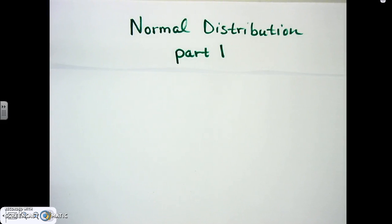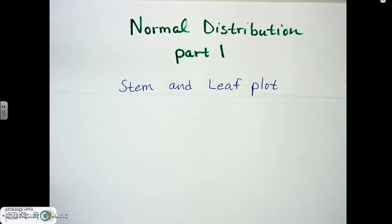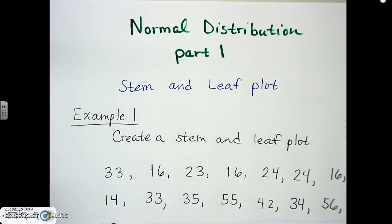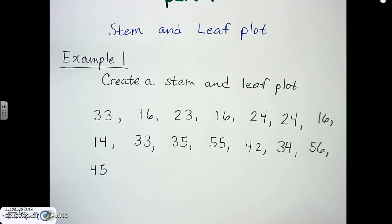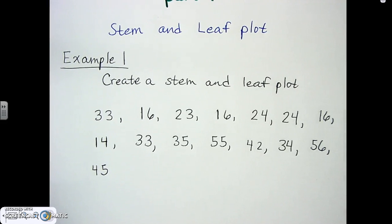The first thing goes back to something you learned in middle school, and I don't think you've done it in high school for a while. It's going to be stem and leaf plot. Here's an example and we're going to go through how to do a stem and leaf plot. Here's example one, and we're going to create a stem and leaf plot using these numbers. Write these down and then we'll work through it.